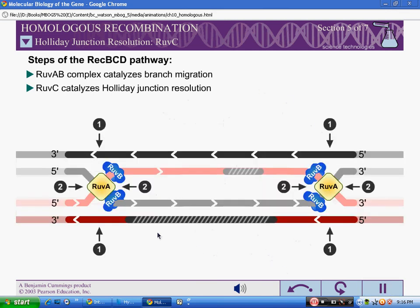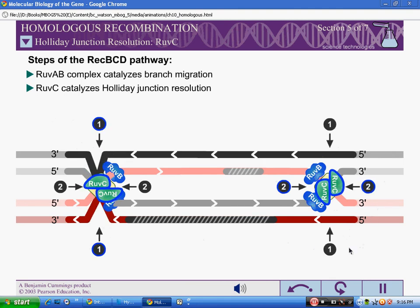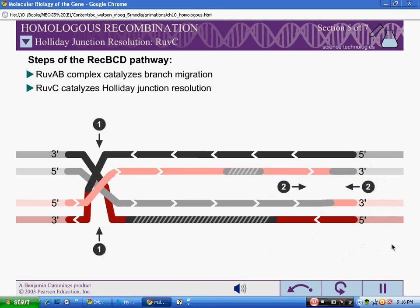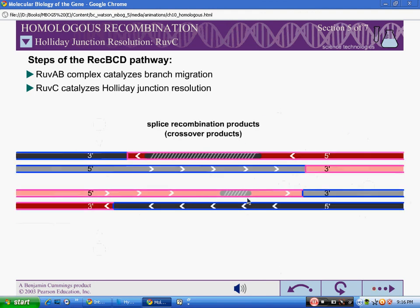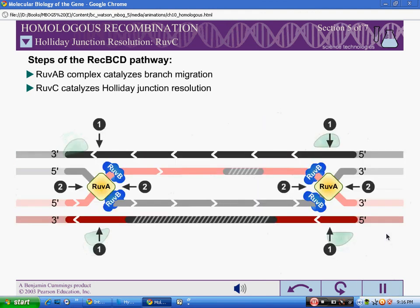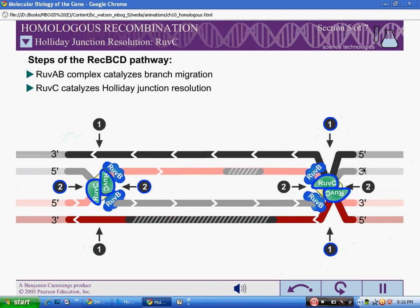If the junctions are cleaved at different sites, splice recombination products result. For example, if the first junction is cleaved at site 1 and the second junction is cleaved at site 2, splice recombination products result. Splice recombination products also result if the first junction is cleaved at site 2 and the second junction is cleaved at site 1.